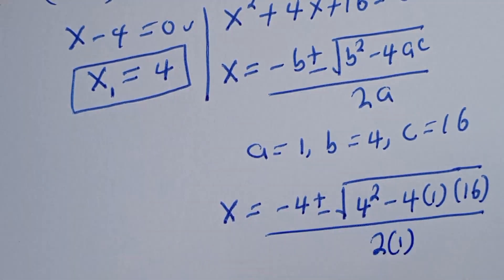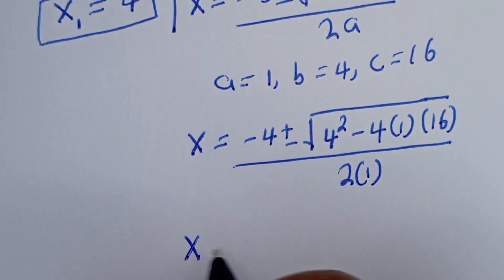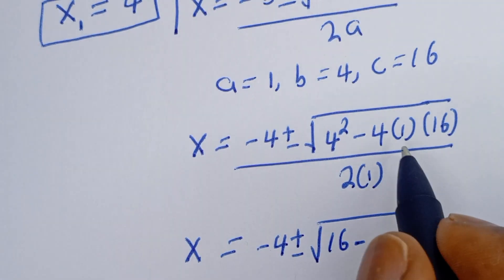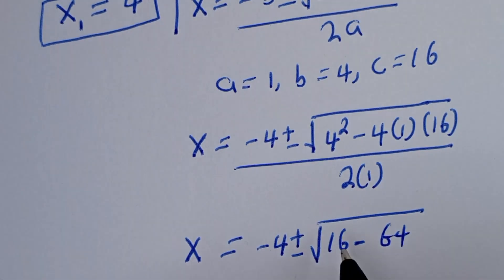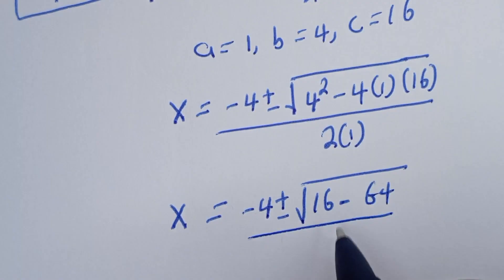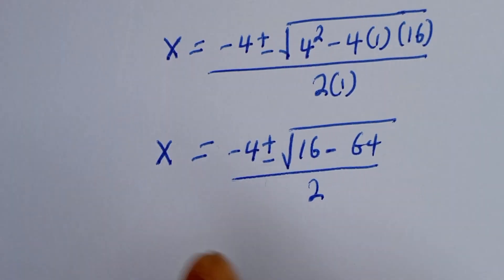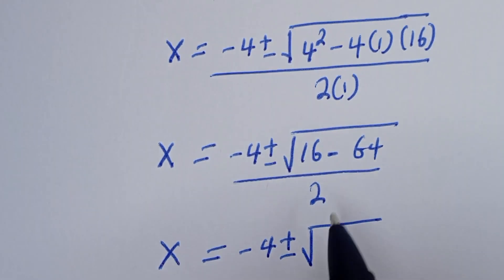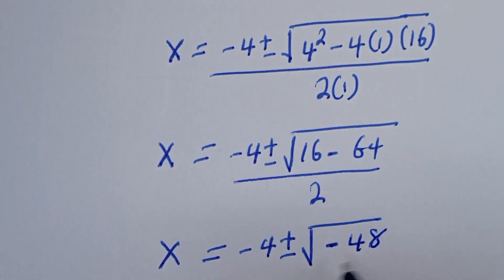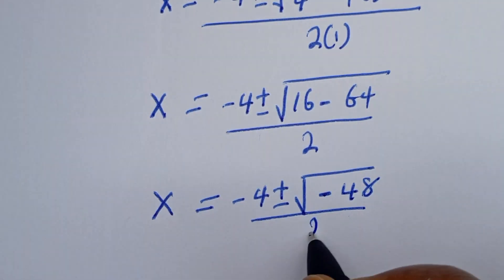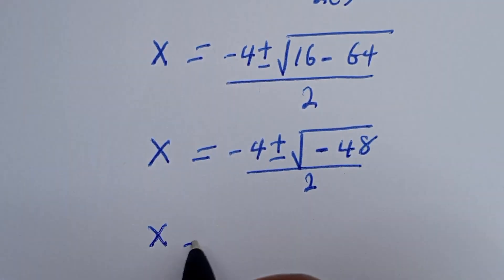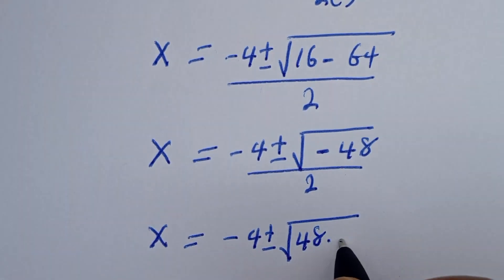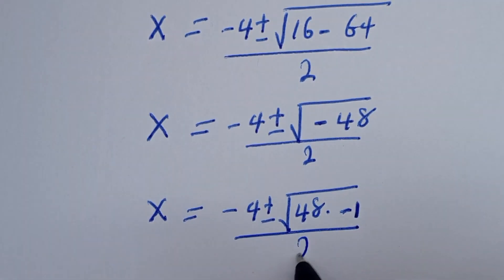All over 2 multiplied by 1. Then s is equal to minus 4 plus or minus square root of 4 squared — that is 16 — minus 4 times 1 times 16, that is 64, over 2. So we have s is equal to minus 4 plus or minus square root of 16 minus 64, that is minus 48, over 2.